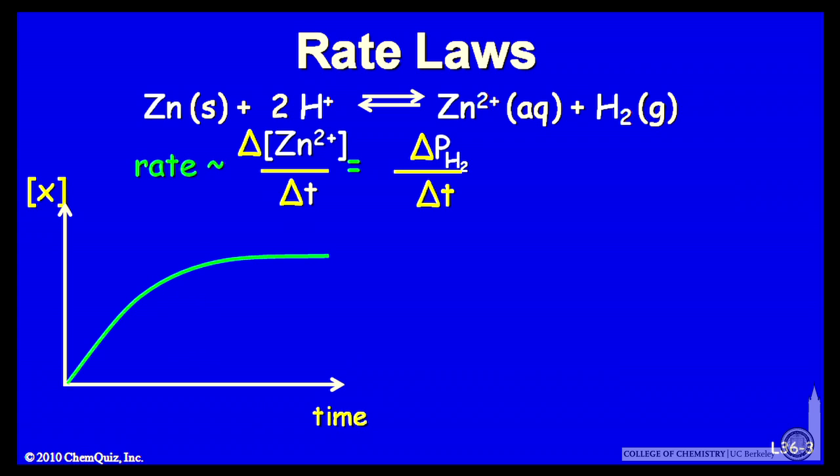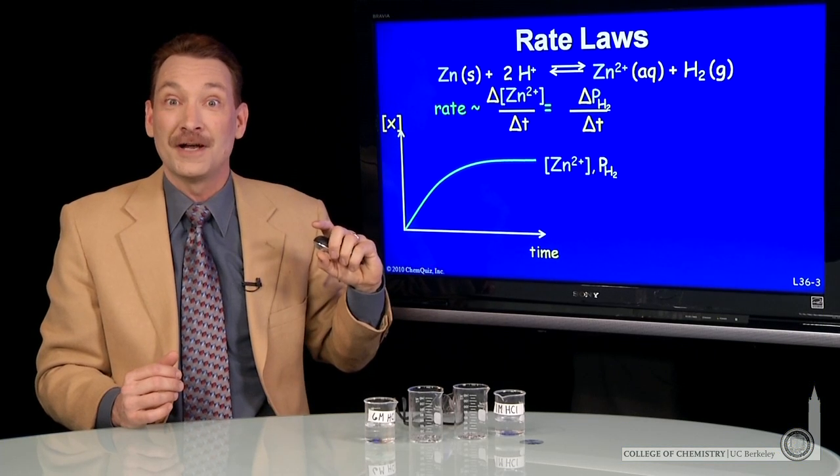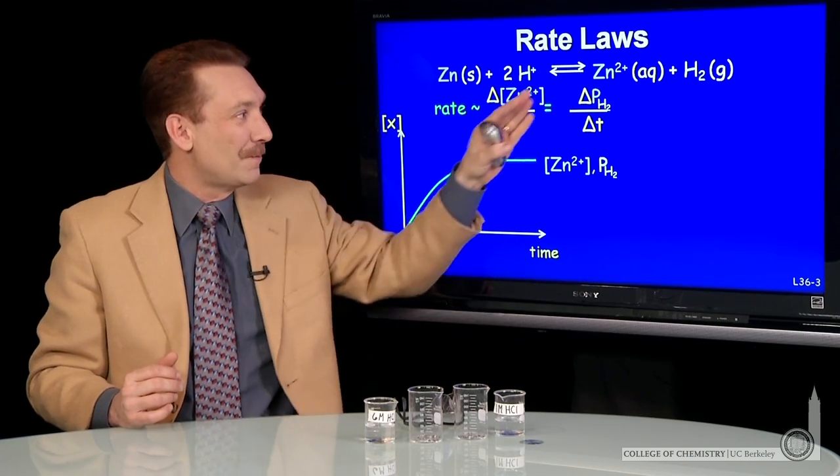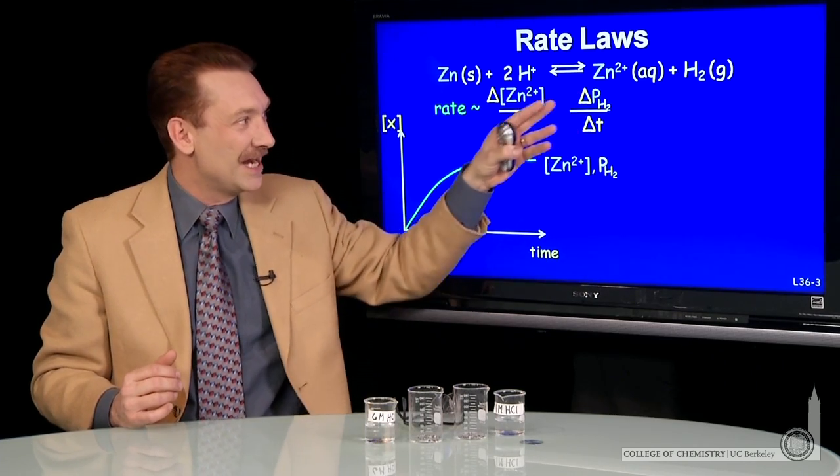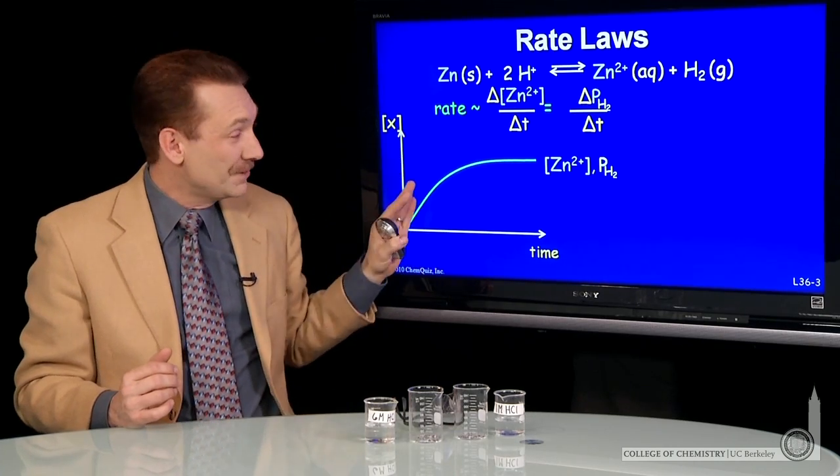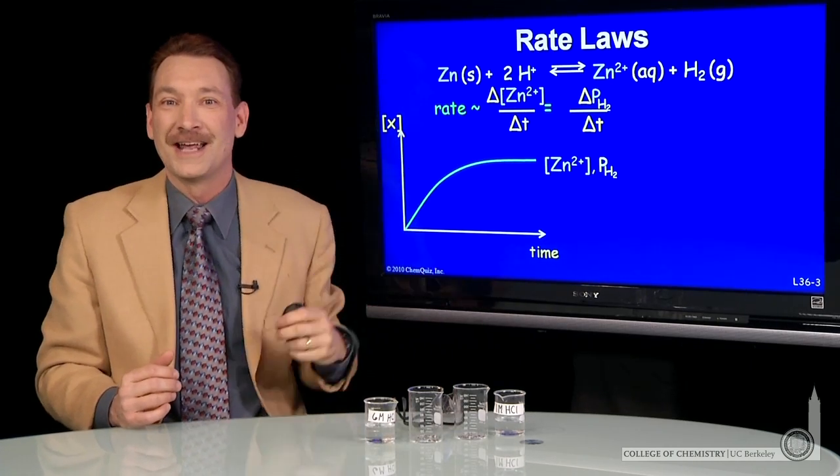If I plot the concentration versus time, you can see for zinc and for hydrogen gas, if I start from the metal and the hydrogen ions, those would build up over time. And if you know something about mathematics, you recognize the change in partial pressure over the change in time represents the slope of the line at a given point.